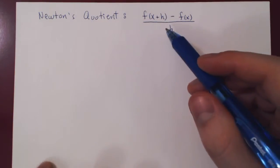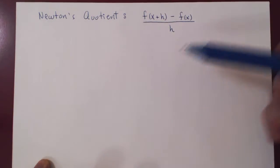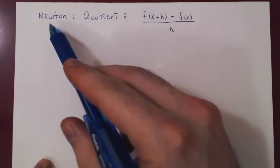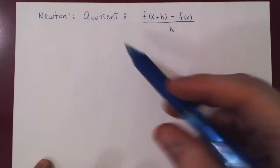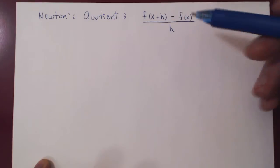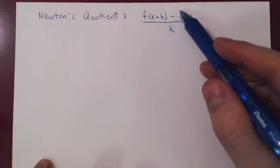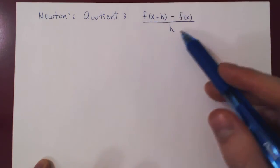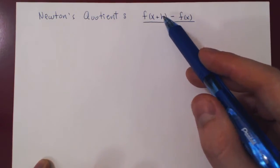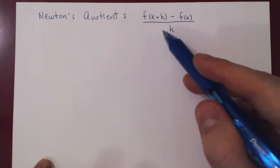In this video, we will discuss Newton's quotient and look at examples for different functions f. Newton's quotient has two independent variables, x and h. Given a function f, it is defined as: f of x plus h, minus f of x, divided by h.